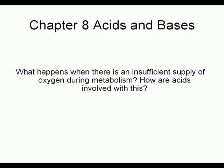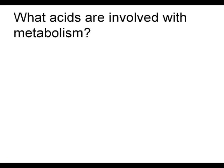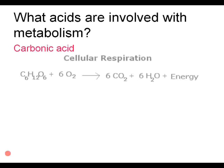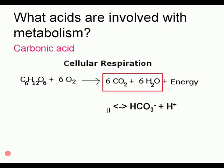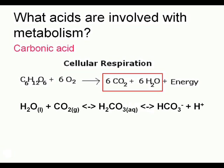The following connection studies acids in metabolism. One example is carbonic acid. Recalling the chemical equation for cellular respiration — focusing on the products carbon dioxide and water — these two products eventually turn into carbonic acid, which ionizes to form a salt and hydrogen ions. Carbonic acid is a weak acid with an equilibrium constant of 4.3 × 10⁻⁷.